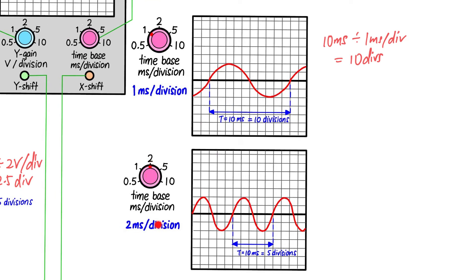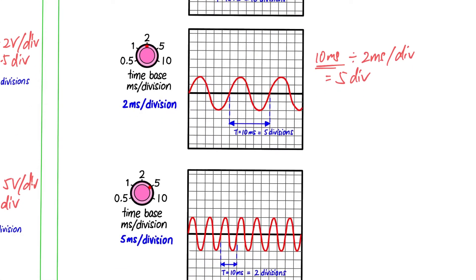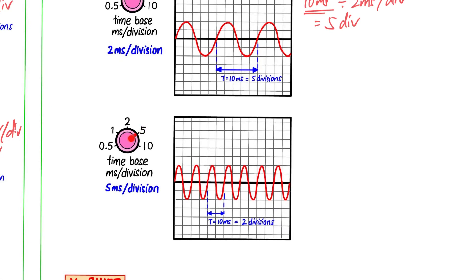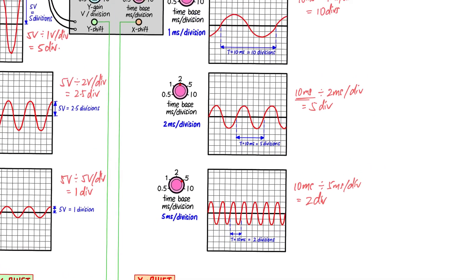For the same source, if we change the time base to 2 milliseconds per division, then 10 milliseconds divided by 2 milliseconds per division gives 5 divisions. So one complete wave now takes 5 divisions. For the last example, with the time base set to 5 milliseconds per division, 10 milliseconds divided by 5 milliseconds per division gives 2 divisions. So one complete wave occupies only 2 divisions.